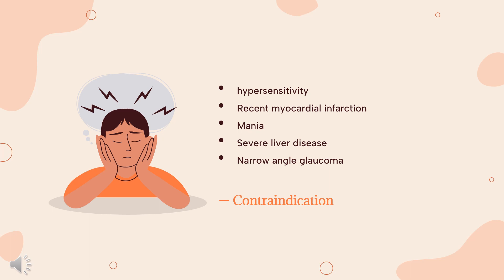Contraindications include known hypersensitivity to clomipramine or any of the excipients, or cross-sensitivity to tricyclic antidepressants of the dibenzazepine group, recent myocardial infarction, any degree of heart block or other cardiac arrhythmias, mania, severe liver disease, narrow-angle glaucoma, and urinary retention. It must not be given in combination or within three weeks before or after treatment with a monoamine oxidase inhibitor, moclobemide included. However, clomipramine can be initiated sooner at 48 hours following discontinuation of moclobemide.